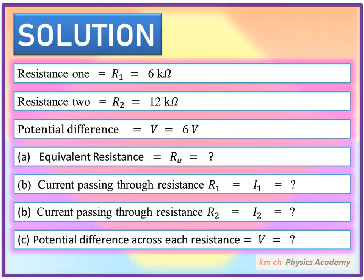Resistance 1 کو R1 رکھتے ہیں، یہ 6 Kilo Ohm ہے۔ Resistance 2 کو R2 رکھتے ہیں، یہ 12 Kilo Ohm ہے۔ Potential Difference کو V رکھتے ہیں، یہ 6 V ہے۔ Part A میں Equivalent Resistance معلوم کرنی ہے، اس کو Req رکھتے ہیں۔ I1 اور I2 کرنٹ اور Potential Difference بھی معلوم کرنے ہیں۔